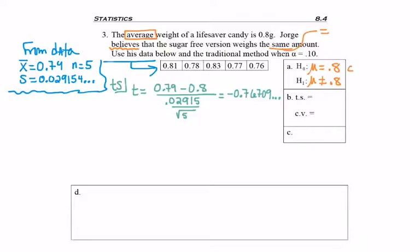And I get negative 0.76709, etc. And going 2 digits to the right of the decimal with rounding, negative 0.77.